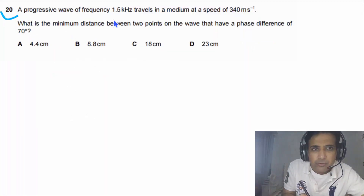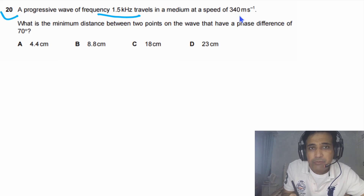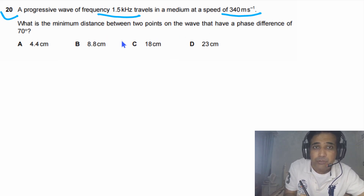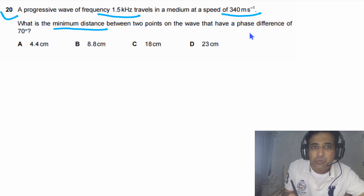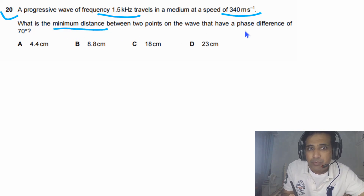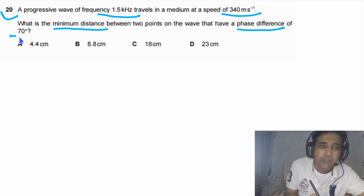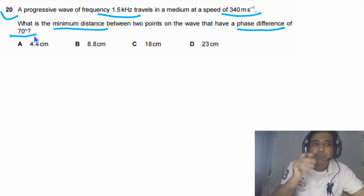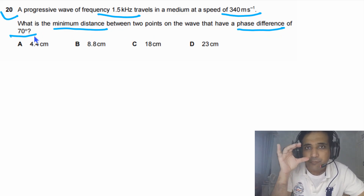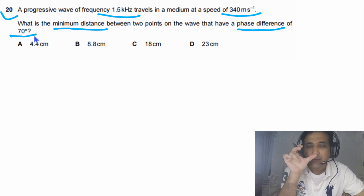Question 20 says: a progressive wave of frequency 1.5 kilohertz travels in a medium at a speed of 340 meters per second. What is the minimum distance between two points on the wave that have a phase difference of 70 degrees? In this case, phase difference is given to us and we need to find the distance between two points.